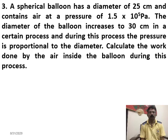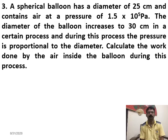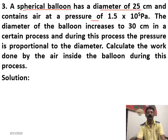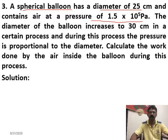Let us solve this numerical. A spherical balloon has a diameter of 25 centimeters and contains air at a pressure of 1.5205 pascal. The diameter of the balloon increases to 30 centimeters in a certain process, and during this process the pressure is proportional to the diameter. Calculate the work done by the air inside the balloon during this process.